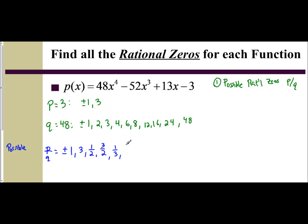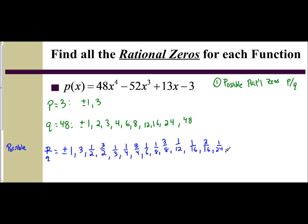Take 1 divided by 4 and 3 divided by 4. Take 1 divided by 6, which is 1 sixth. And when you take 3 divided by 6, that's 1 half, which is already accounted for. So 1 eighth and 3 eighths. You get 1 twelfth. And when you do 3 divided by 12, you get 1 fourth. Then 1 divided by 16 and 3 divided by 16. 1 divided by 24 and 3 divided by 24: 1 divided by 24 gives 1 24th; 3 divided by 24 gives 1 eighth. Then 1 divided by 48. Take 3 divided by 48, which is 1 16th — already accounted for.